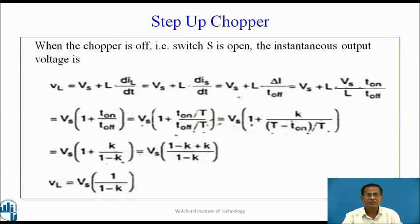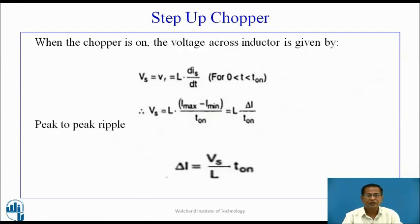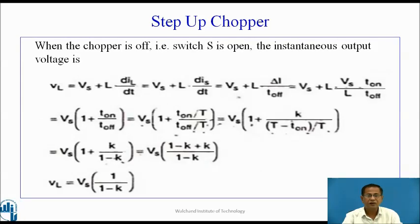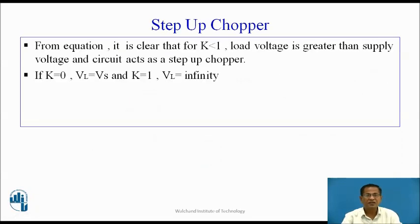When the chopper is off (switch S open), the instantaneous output voltage is VL = Vs + L·dIL/dt. Using ΔI = (Vs/L)·T1 and substituting into Vs + L·ΔI/Toff, the equation becomes VL = Vs·(1 + T1/Toff). Dividing numerator and denominator by T, we obtain VL = Vs·(1/(1−K)). From this equation, for K < 1, load voltage is greater than supply voltage and the circuit acts as a step-up chopper. If K = 0, VL = Vs; and if K = 1, VL = infinity.